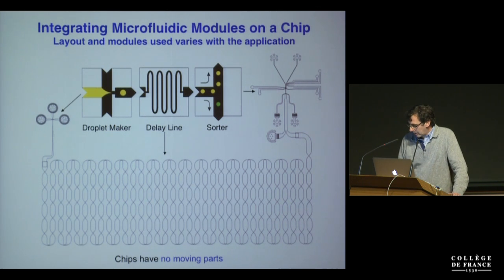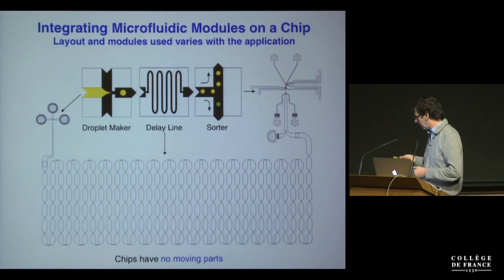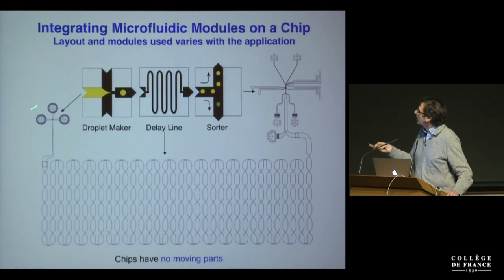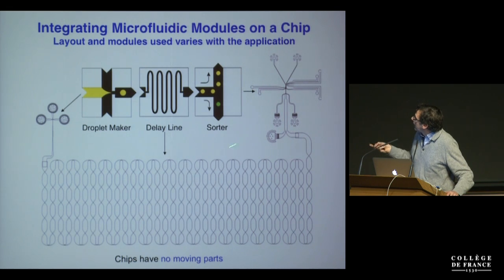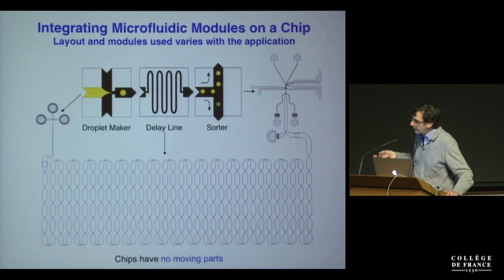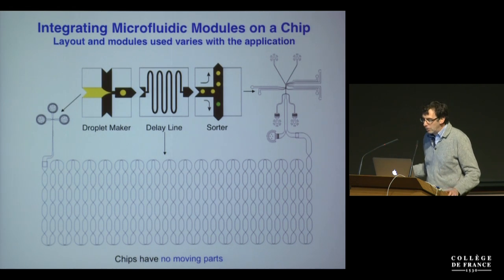We can use microfabrication techniques to create integrated microfluidic chips where the layout and modules depend on the application. Here is a relatively simple device — it starts off with a droplet maker, then there is a delay line to allow incubation, and then there is a fluorescence-activated droplet sorter. What's really nice is that these chips are quite simple because they have no moving parts.